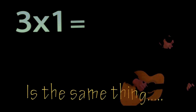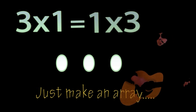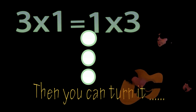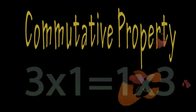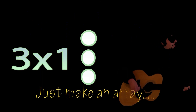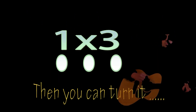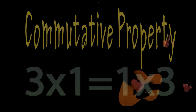Three times one is the same thing as one times three. Just make an array, then you can turn it — commutative property. Just make an array, then you can turn it — commutative property.